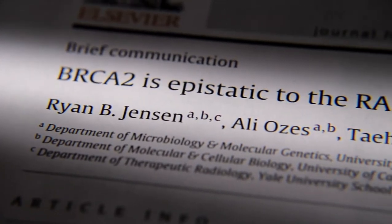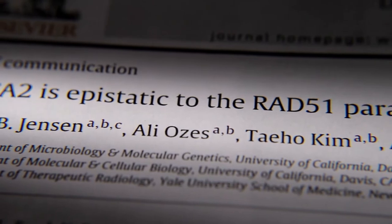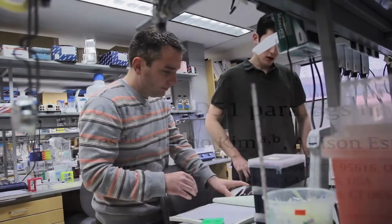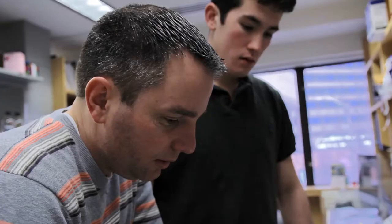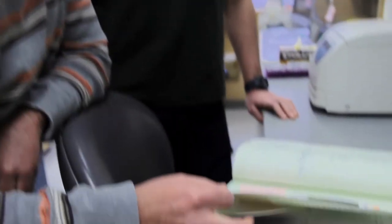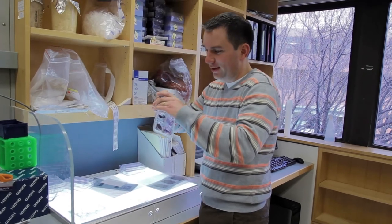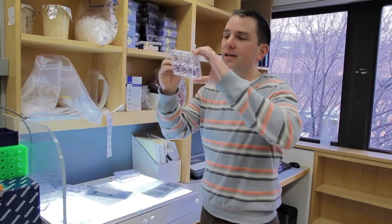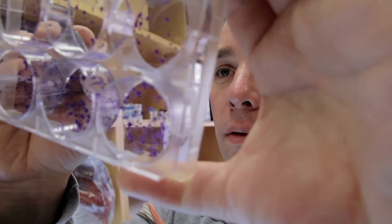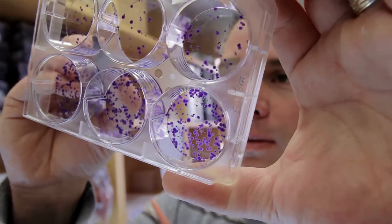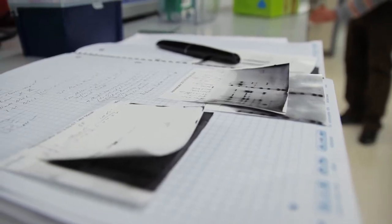We knew that the RAD51 paralogues were related to RAD51. They look similar, they have similar amino acids, similar sequence homology, but they're different. We know they're involved in double strand break repair, somehow facilitating this RAD51 nuclear protein filament formation, but we really had no clue, no idea what these proteins are actually doing.